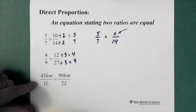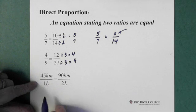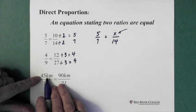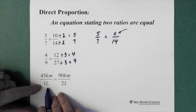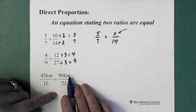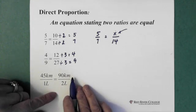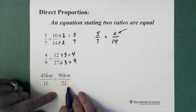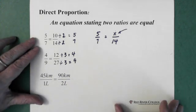And again, we look at this one and we can see that the relationship is the same. If we can travel 45 kilometers in one liter, then we should be able to travel 90 kilometers on two liters. And again, this is just another proportion.